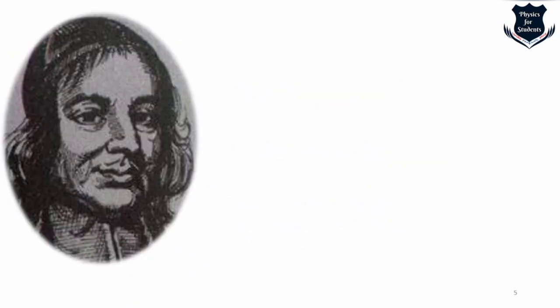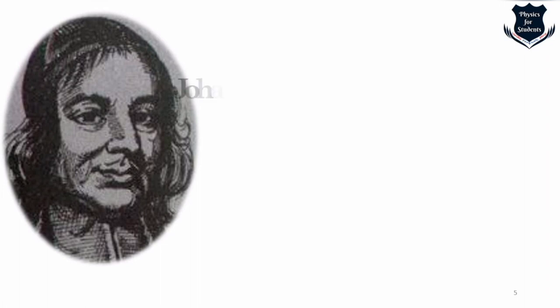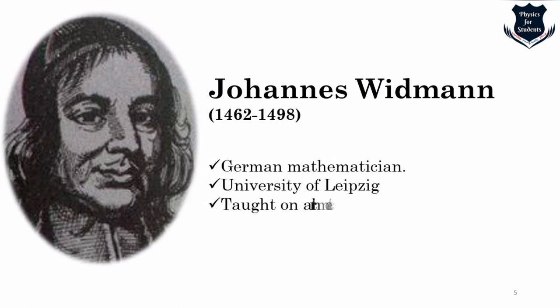Johannes Widman was a German mathematician best remembered for an early arithmetic book which contains the first appearance of plus and minus signs. He attended the University of Leipzig, registered for the winter semester of 1480 as Johannes Widman d'Egra. He graduated with a first degree in 1482, earned his master's degree in 1485, and then taught at the University of Leipzig on the fundamentals of arithmetic, computation of lines and algebra.